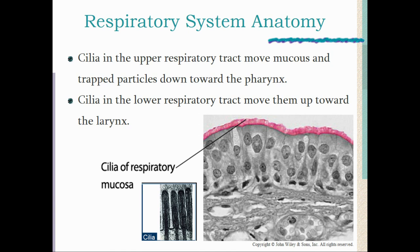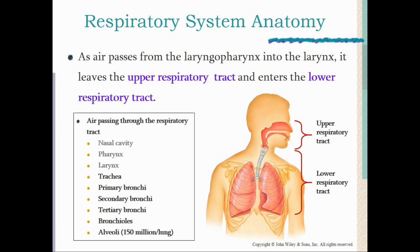Cilia in the upper respiratory tract move mucus and trapped particles — like dust or pollen — downward toward the pharynx so they can be swallowed and removed from the airway. Conversely, cilia in the lower respiratory tract move particles upward through the larynx so they can be coughed, sneezed, or swallowed out of the airway.